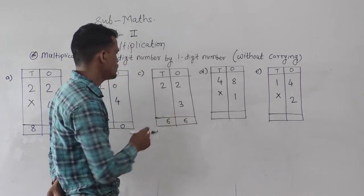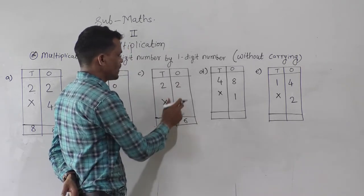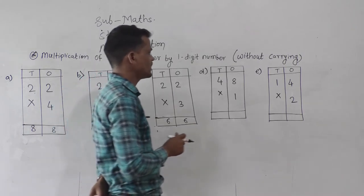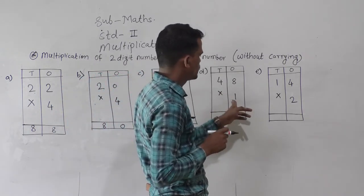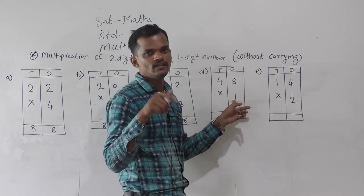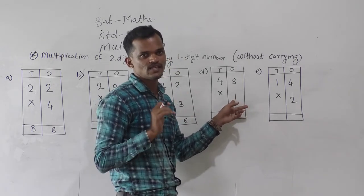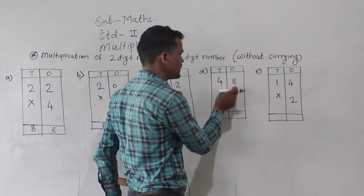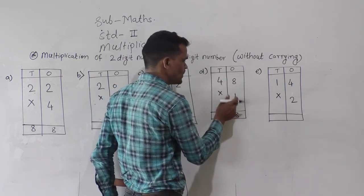Next, you have to learn that property: any number multiplied by 1 gives the product as that same number. So here see, 1 eight is 8, 1 four is 4. Here, 48 is multiplied by 1, so the answer is the same number.